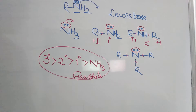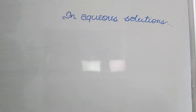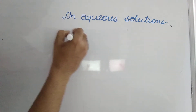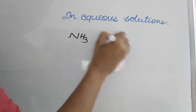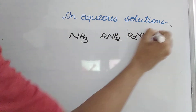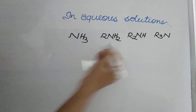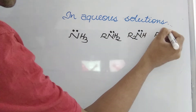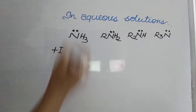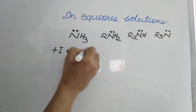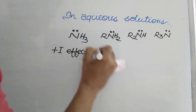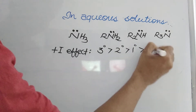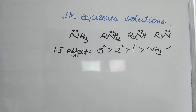In the gaseous state, inductive effect is the only factor, so tertiary is better than secondary, than primary, than ammonia. In aqueous solutions, other factors also work. Even in aqueous solution, inductive effect is still present, so the same trend from inductive effect applies, but additional factors must be considered.